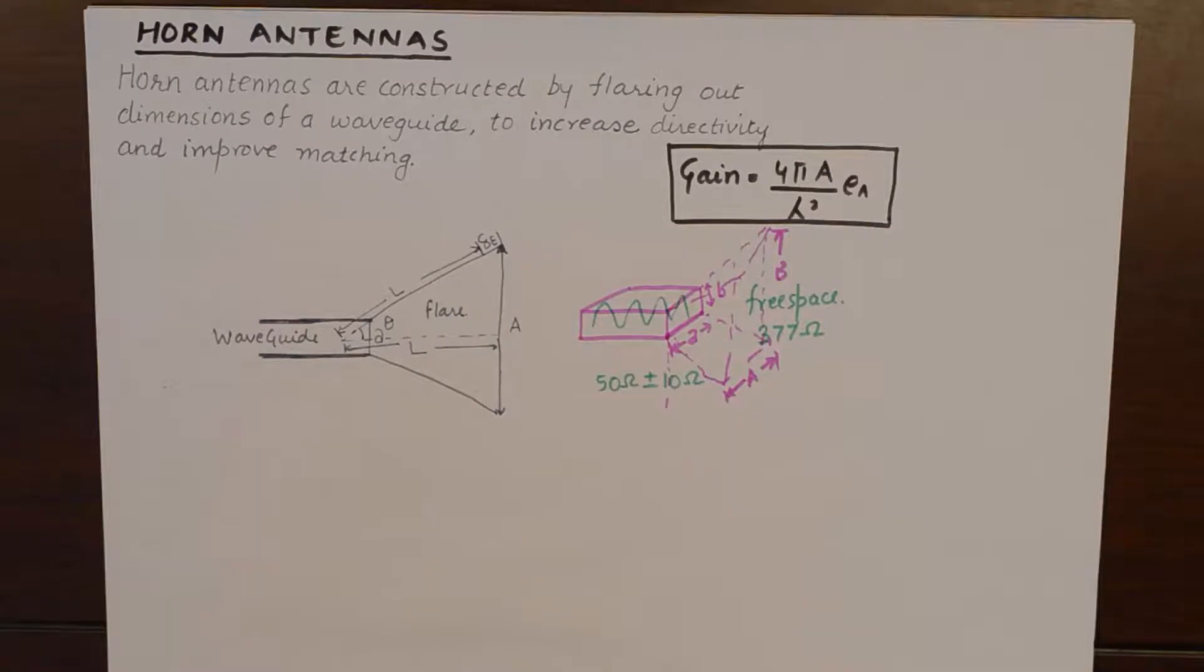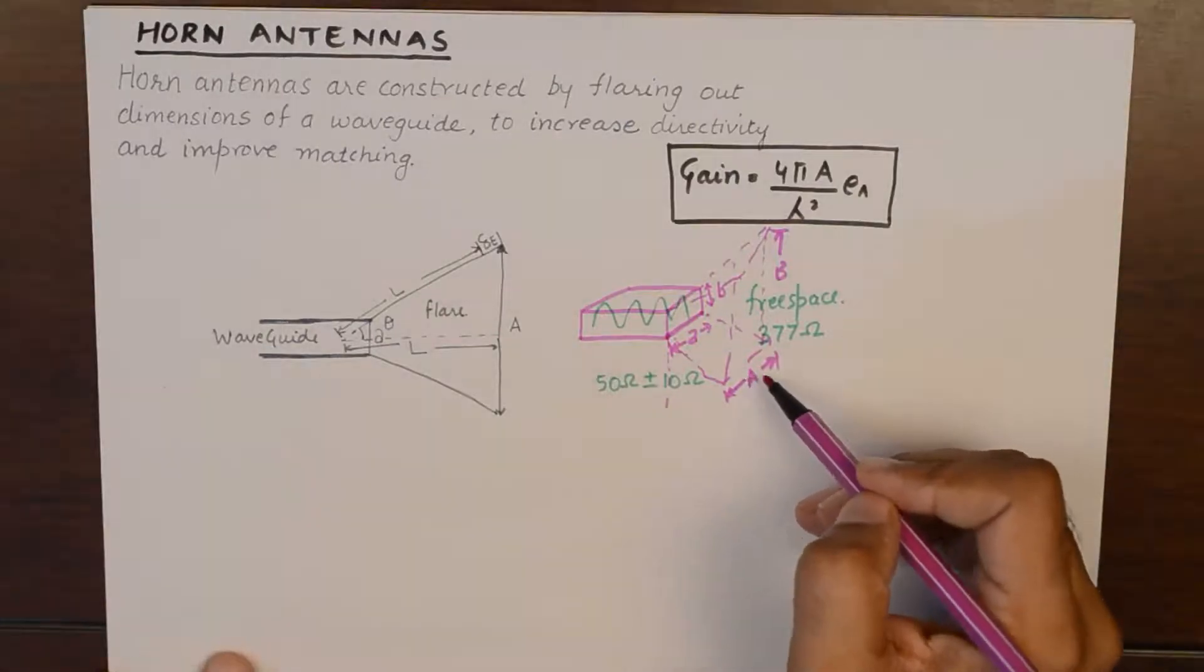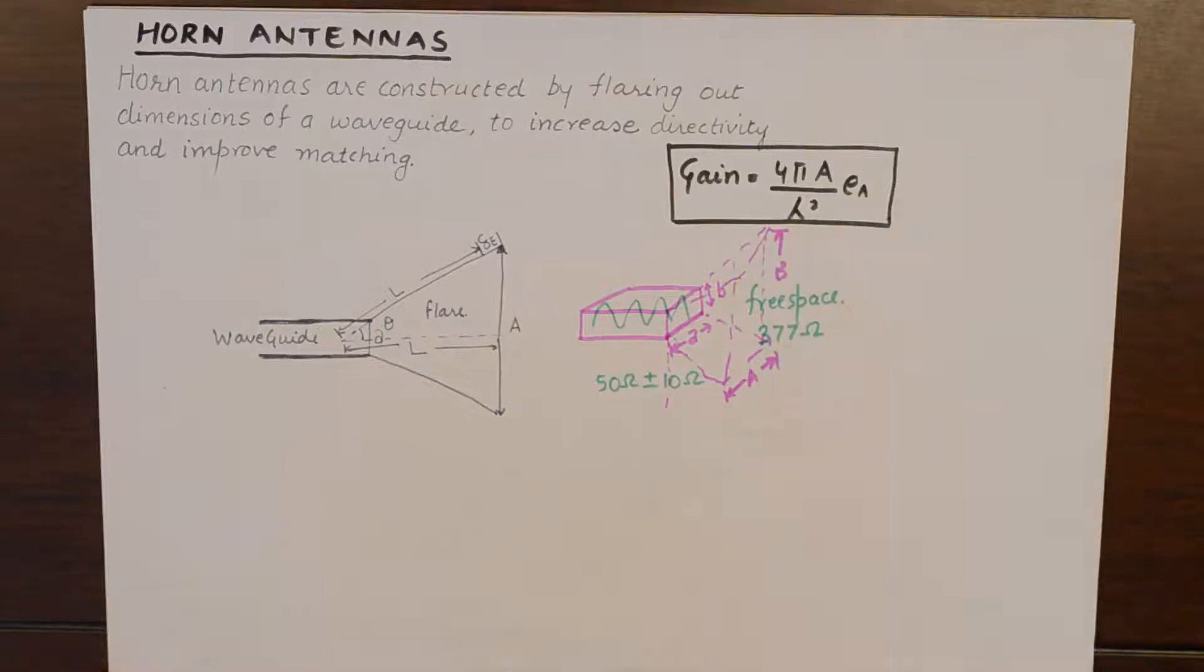Now by doing so, by increasing the aperture or the mouth of the waveguide, we are trying to match the impedance with that of the impedance of air. Now typically, the dimensions of A and B are going to be some multiple of small a and b. They can be three or four times small a and b. And that results in the increased internal impedance of the waveguide.